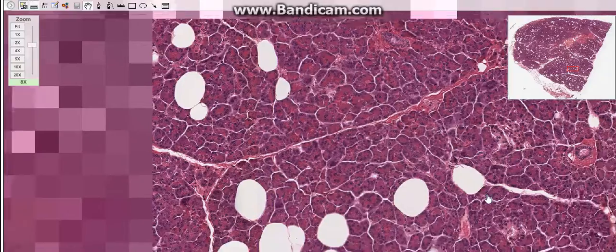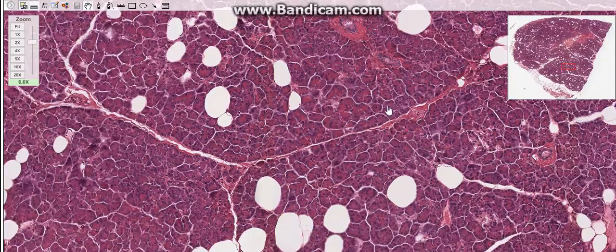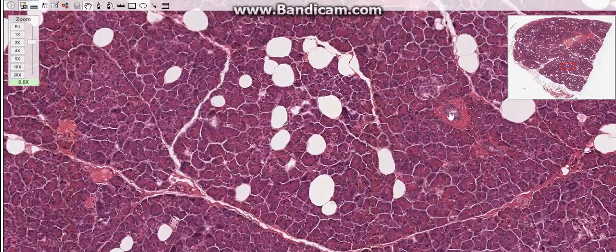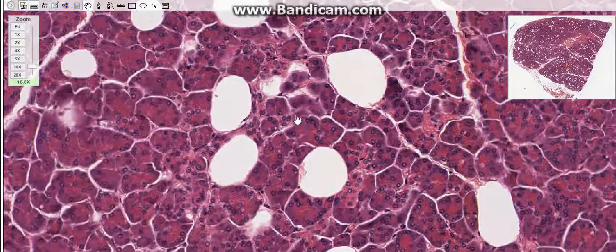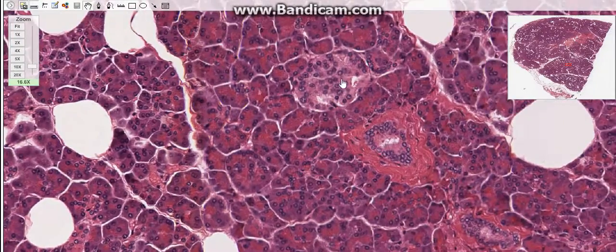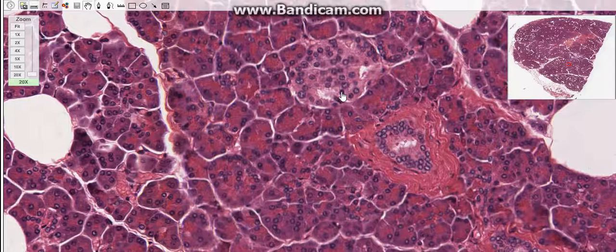The second type are the alpha cells, which constitute about 20%. These alpha cells are pink stained. They are distributed on the periphery of the islets. They secrete the hormone glucagon.